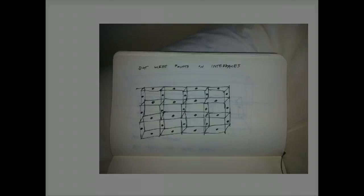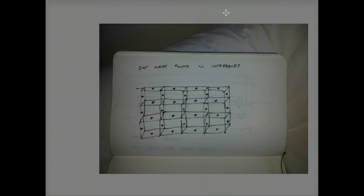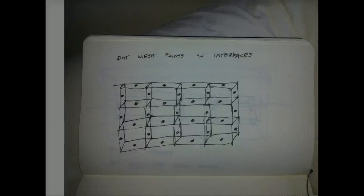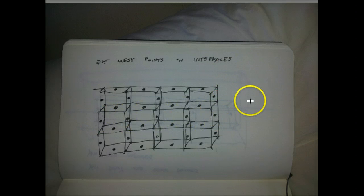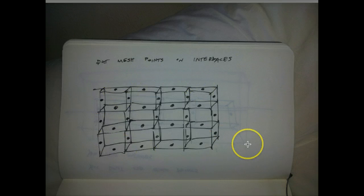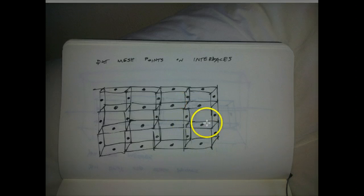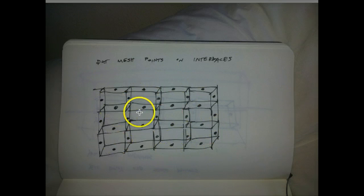Put mesh points in interfaces. Now if we're going to do this in more dimensions — generalizing as far as possible — before we just had this line with point, point, point, but now we could go in 2D. This is how we would do the blanket. There's an interface between these two points and you can put a point here — it's all in these interfaces on the outside.